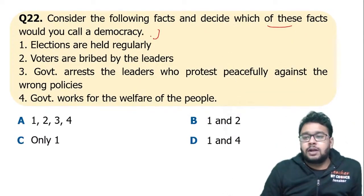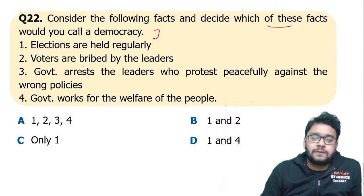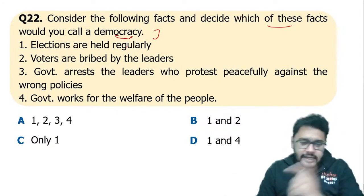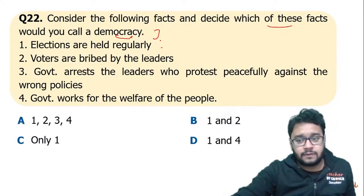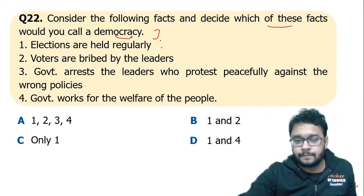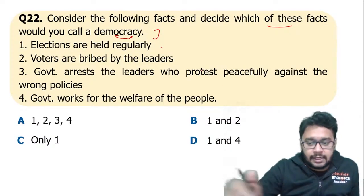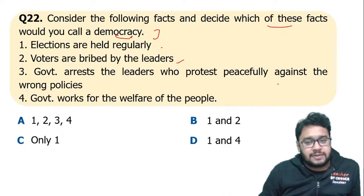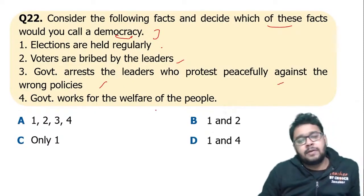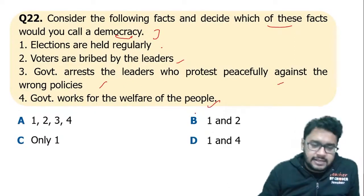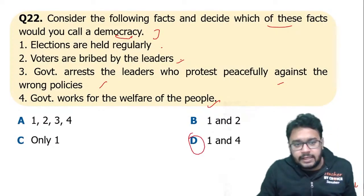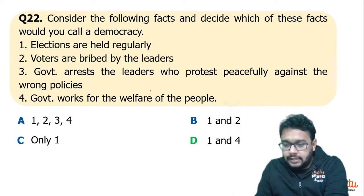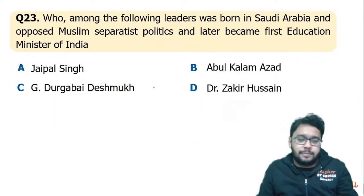Consider the following facts and decide which would you call a democracy: elections are held regularly, voters are bribed by leaders, government arrests leaders who protest peacefully against wrong policies, and government works for the welfare of the people. The answer is D — one and four. In a democracy, voters are not bribed and the government cannot arrest anyone merely for peacefully protesting.